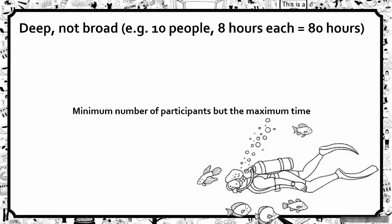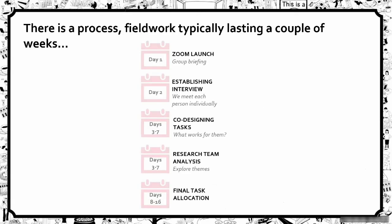One way we manage the time and money constraint is by hand-picking a small number of participants and thinking carefully about diversity and inclusion. In Person First, we go really deep but not broad — we use the minimum number of participants but spend the maximum amount of time with them. With ten people, you might get eight hours of input each, which is 80 hours of insights.